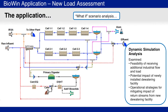Once the model was calibrated and predictive of the plant behavior, it was applied to a number of what-if scenarios to explore the plant's performance if it accepted all or part of the additional industrial load. This analysis considered both current and several projected future flows. The ability of the new solids handling facility to process the required amount of solids was assessed, and operational aspects, such as when centrate was returned to the main process, were explored.